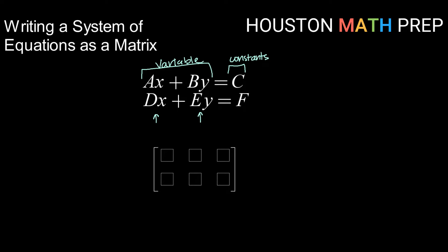The way that this information gets transferred into a matrix is kind of the way it's already laid out. We're going to take the coefficients of x from each equation and place them into one column. We're going to take the coefficients of y and place them into a second column, and then we're going to take our constants and place them into their own column. We're also going to keep all information from equation 1 in row 1 and all information from equation 2 in row 2.